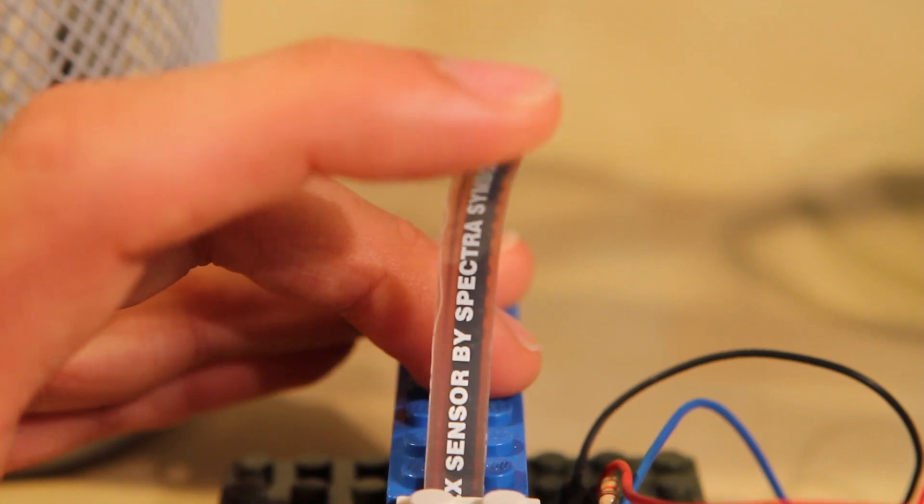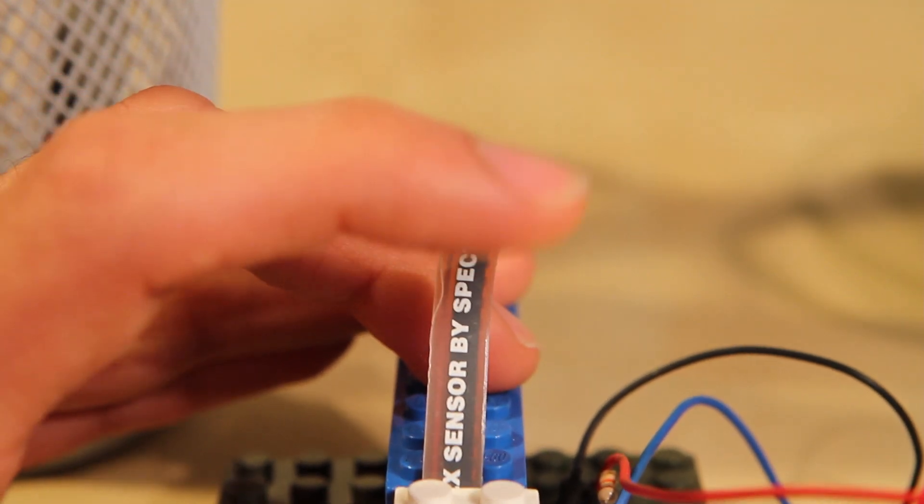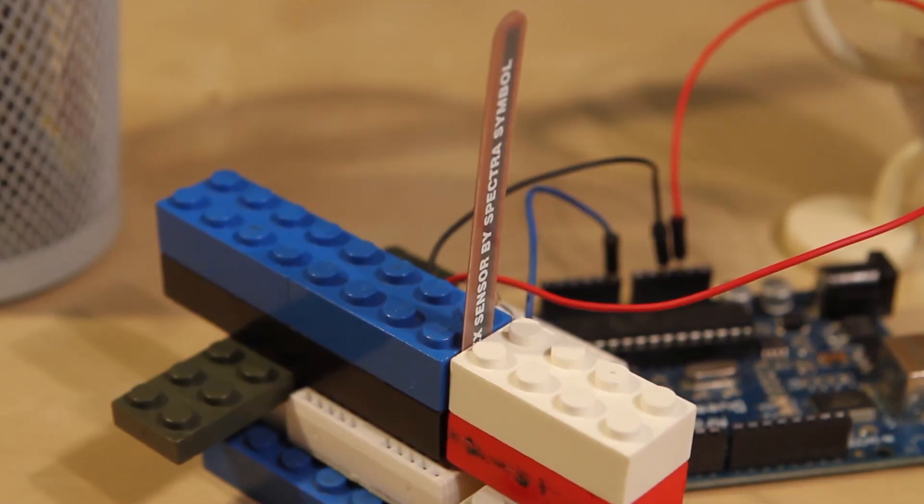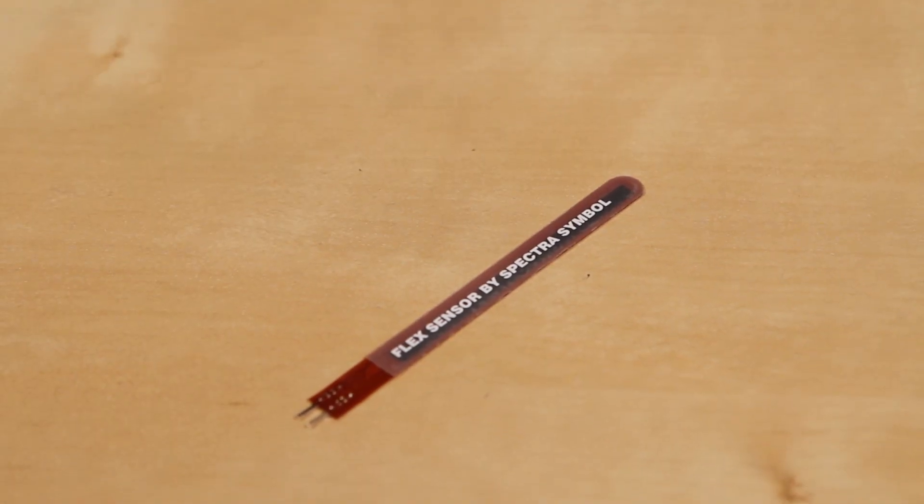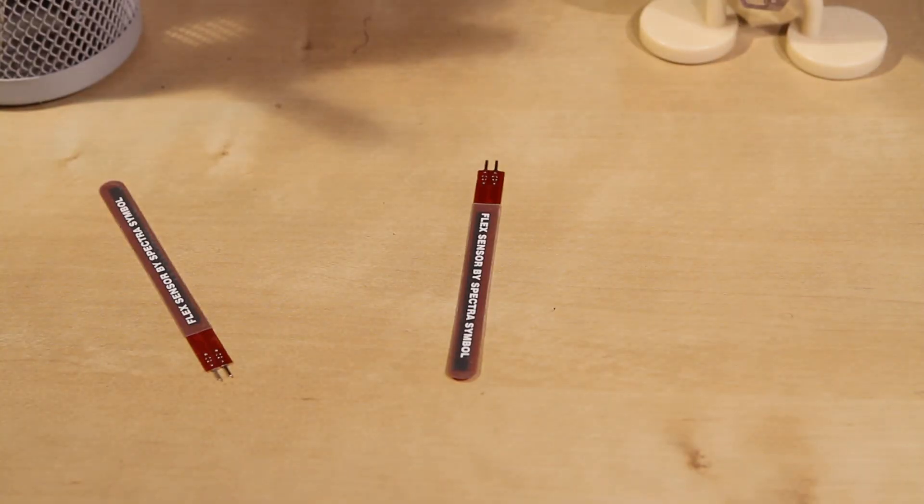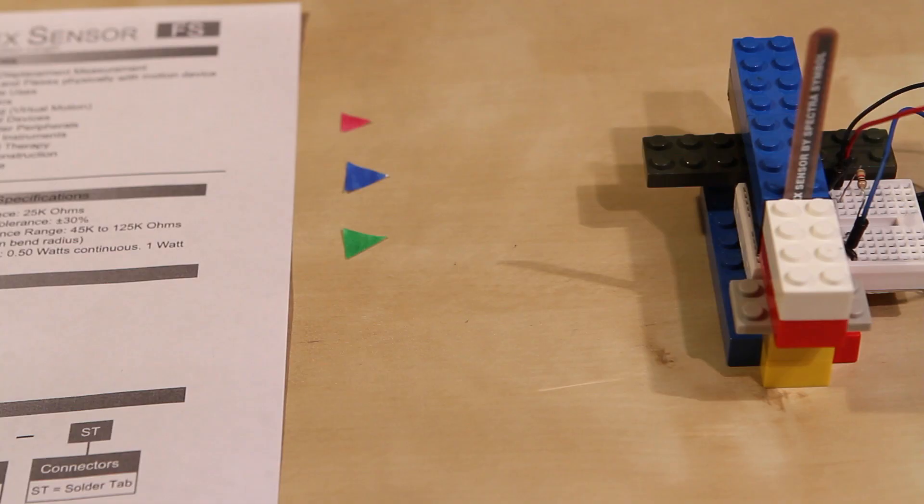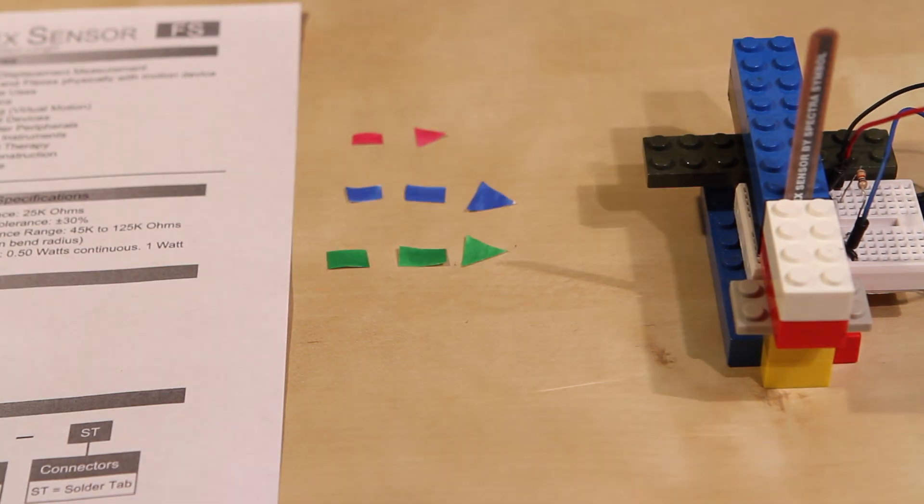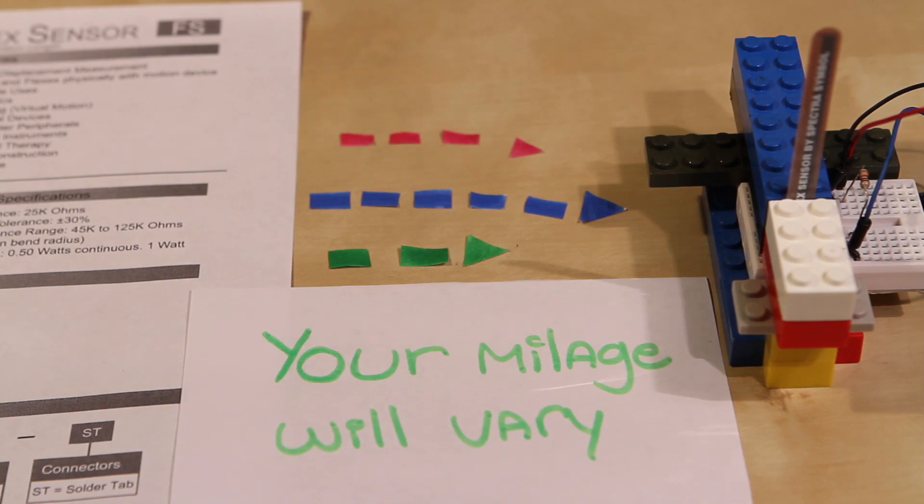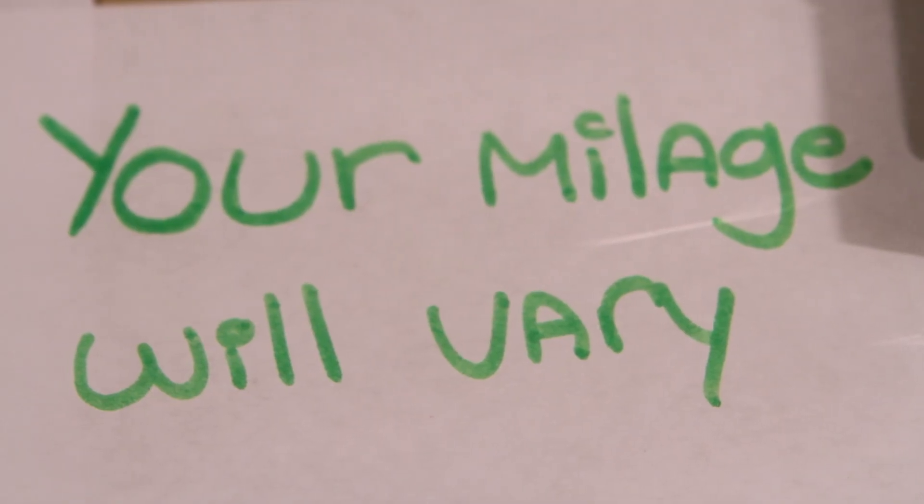Now you need to bend the flex sensor toward the written text to get an accurate reading, but even the reading is still wrong. My sensor is straight, but this isn't zero degrees. Did I buy a broken sensor? Did the spec sheet lie to me? Not really, it is natural for each sensor to vary a little bit. That is why you treat the spec sheet as a starting point to work off of, because your mileage will vary. Repeat after me: your mileage will vary.